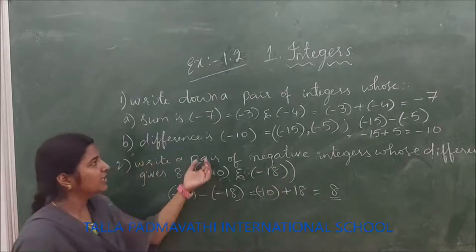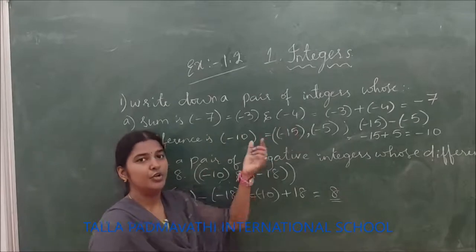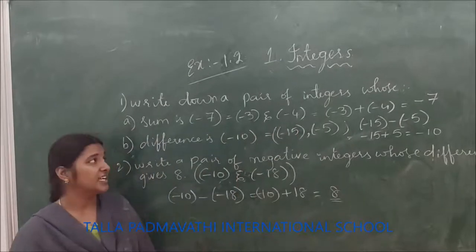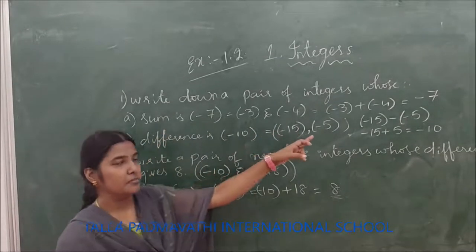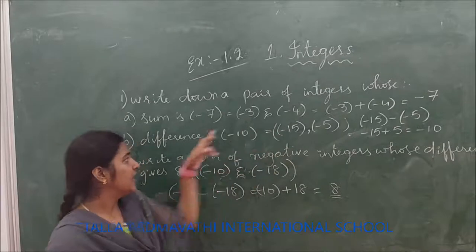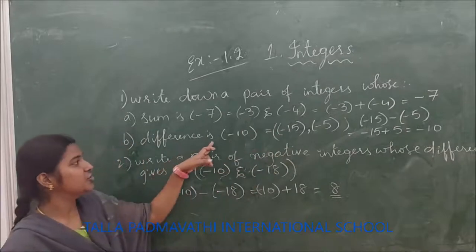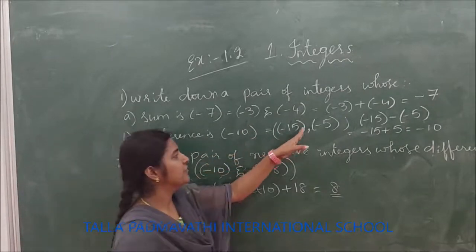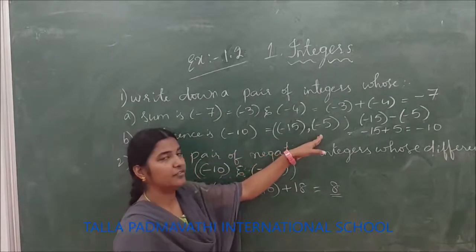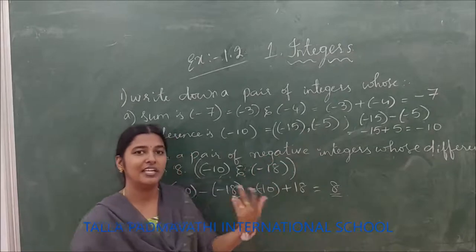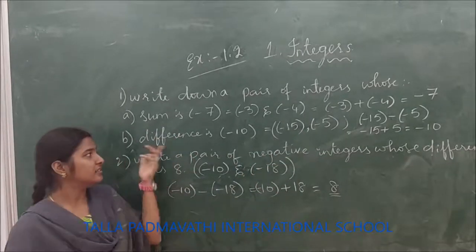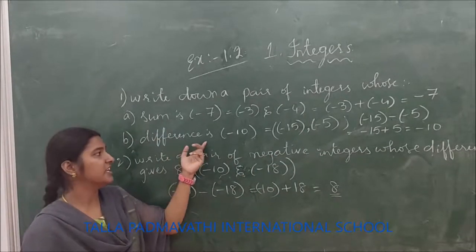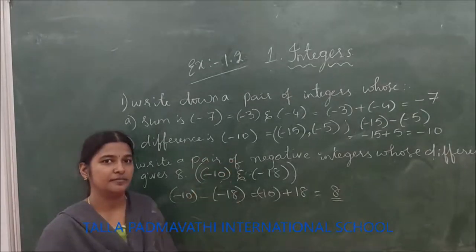Note that not only minus 3 and minus 4 — you can take any integers such that the sum should be minus 7, and for part B the difference should be minus 10. I took only minus 15 and minus 5, but you can take any integers that satisfy the difference of minus 10.